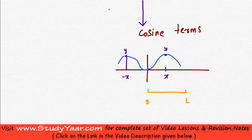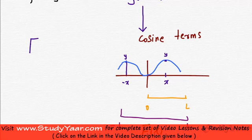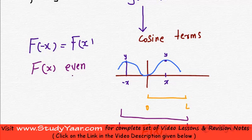So if you look at this function between minus l to plus l, let's call this function as capital F of x. Then if you look at capital F of x, which is essentially this function, it is an even function. Because your capital F of minus x is equal to capital F of x. Therefore your capital F of x is even.